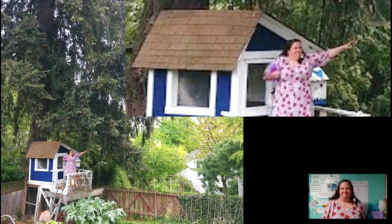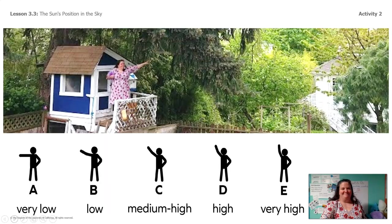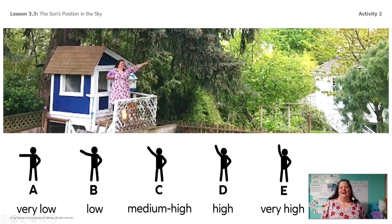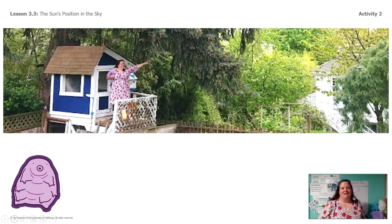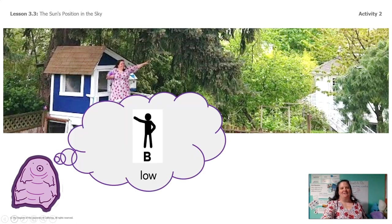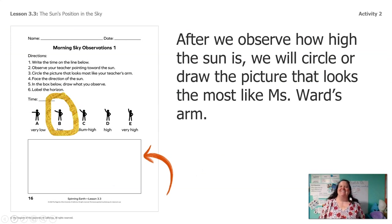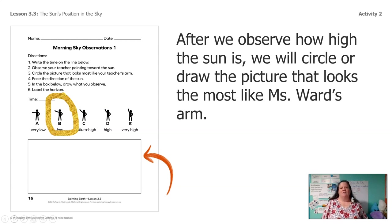Look at where I'm pointing. Would you say I was pointing very low, low, medium, high, or very high? Lavender has an idea — do you agree or disagree? Lavender says low. Did you guys say low too? After we made our observation, we're going to circle or draw the picture that looks most like my arm. If you have the packet you can circle it, but if you don't, you can just draw a little stick figure pointing for low.